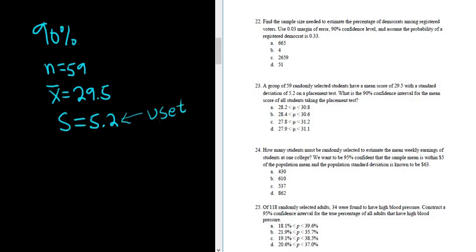Remember, if they give you the population standard deviation, you use z. If they don't, then you use t. Alright, so now we'll go to StatCrunch.